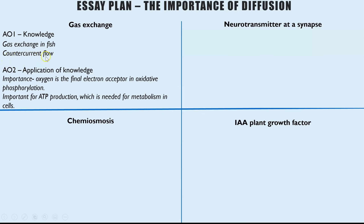I would focus on the countercurrent flow mechanism as a way to explain how diffusion can occur across the entire length of the lamellae, making sure I included as many key terms as possible. That would demonstrate my detailed A-level knowledge of gas exchange. The other half of the paragraph is where the mark scheme kept saying 'clear links are made to the theme' — and what this means is you clearly link why what you've just said about gas exchange in fish is really important.